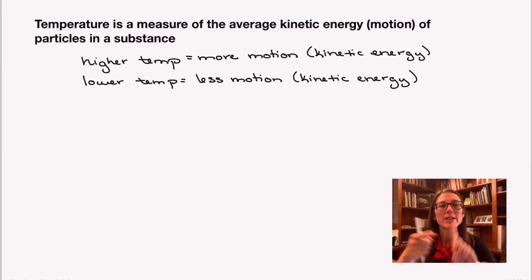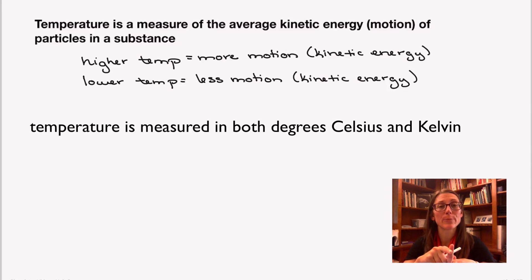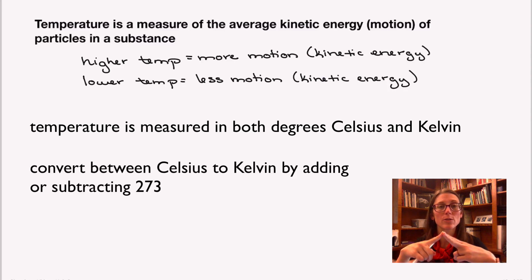So as we wrap this one up, temperature is related to the average kinetic energy of the particles. The higher the temperature, the higher the average kinetic energy. We can measure that temperature using two different units in our class. We're going to use degrees Celsius, which is based on the freezing and boiling points of water, and we're also going to use Kelvin, which is based on the motion of the particles. And to convert from degrees Celsius to Kelvin or vice versa, you're either adding or subtracting 273.